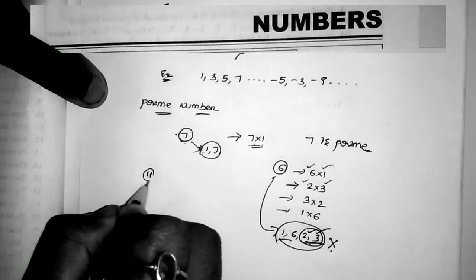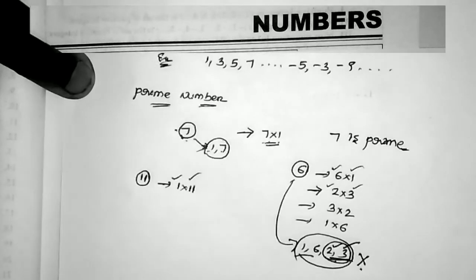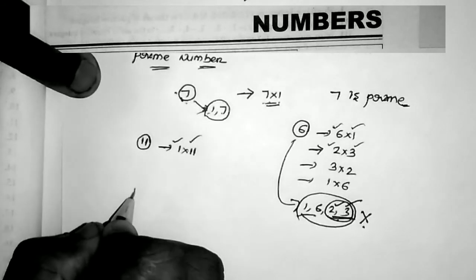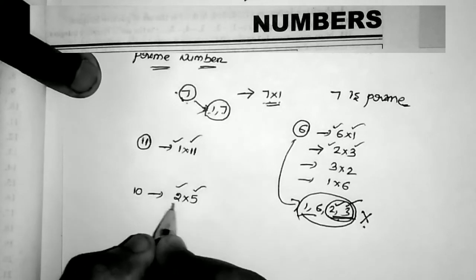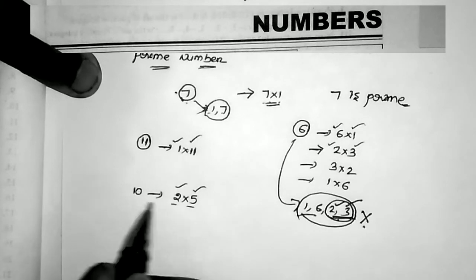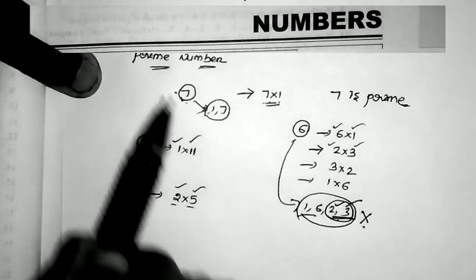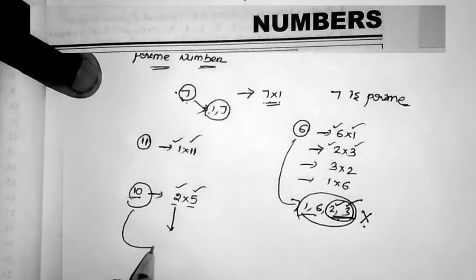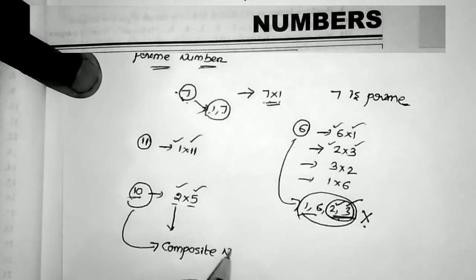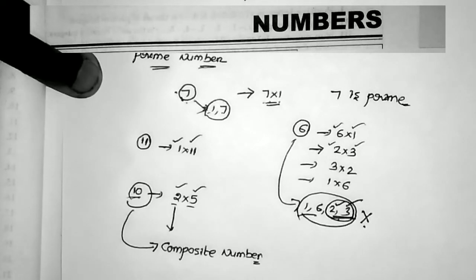The number which is not a prime number is called a composite number. So we have: prime numbers — those divisible only by 1 and themselves — and composite numbers — those which are not prime numbers. That is the difference between them.